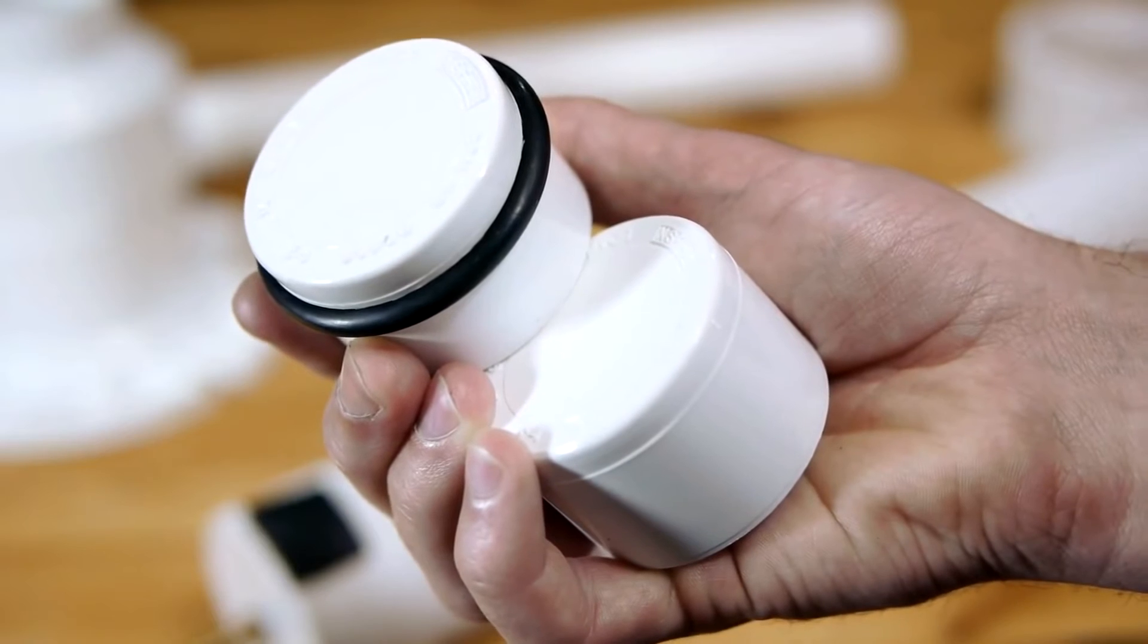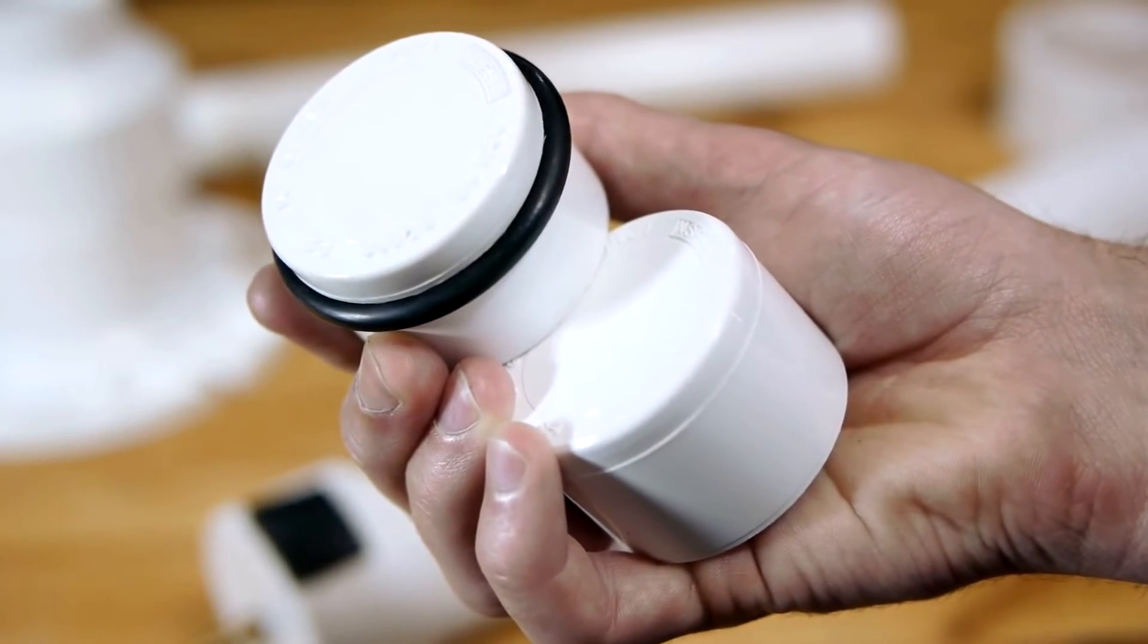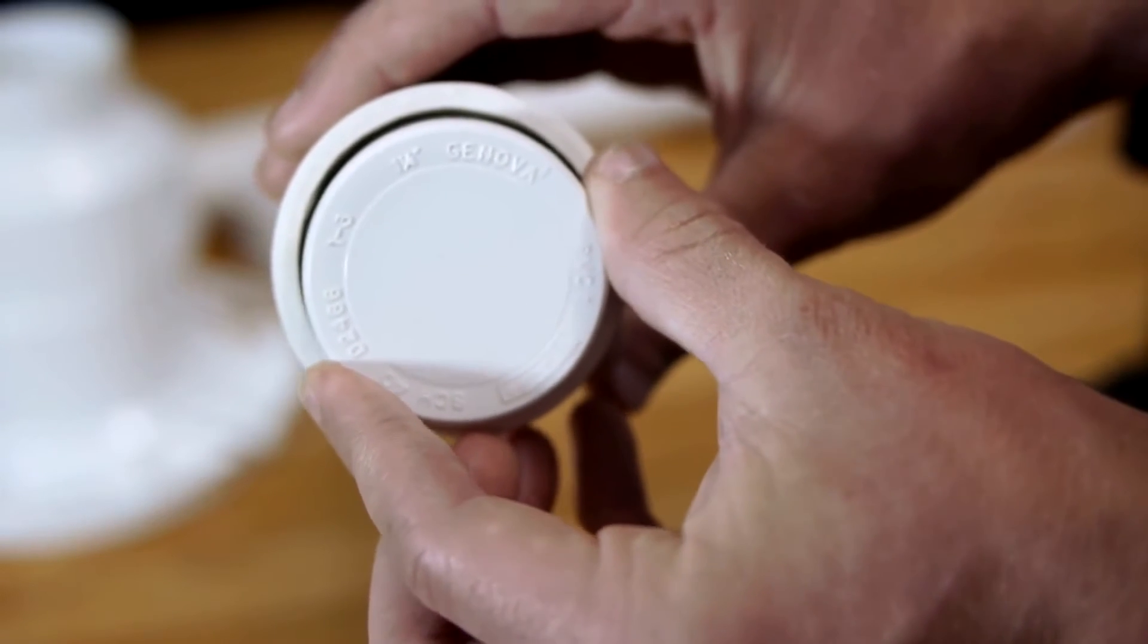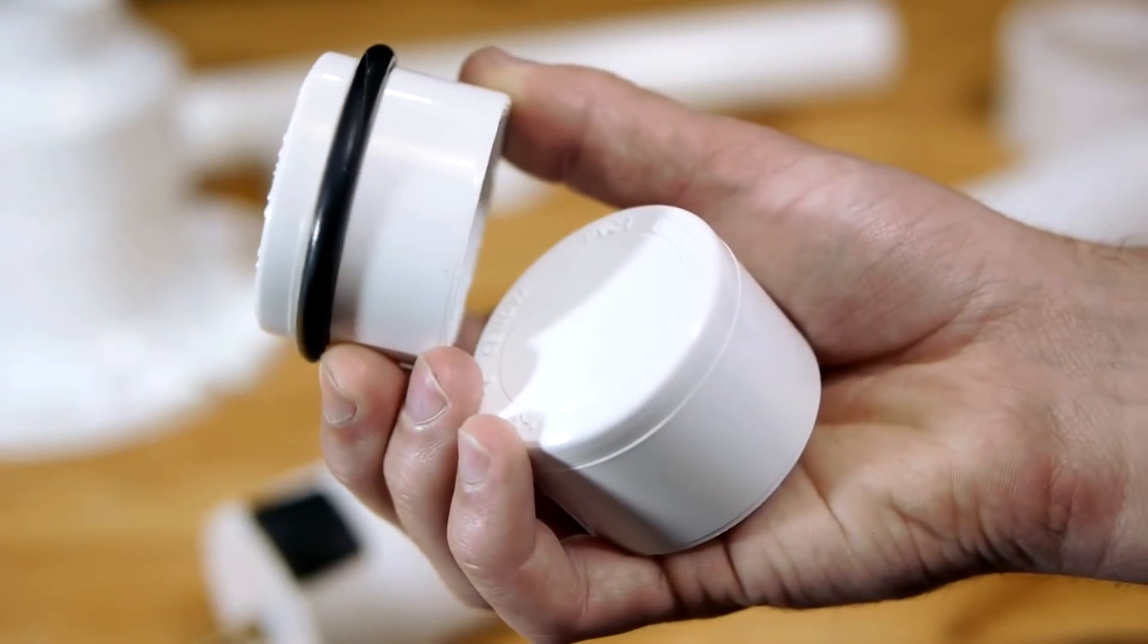To make the piston, I start with an inch and a quarter PVC end cap, which is already a close fit inside of the 2-inch PVC pipe, but to make it an airtight seal, the cap will need an O-ring installed.